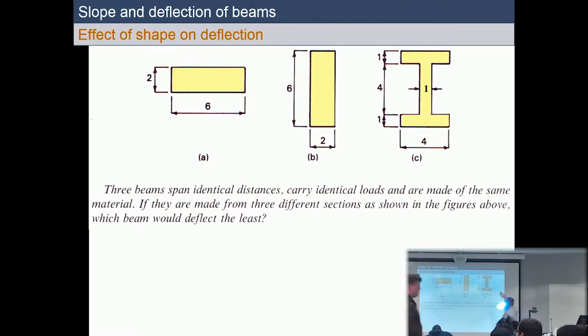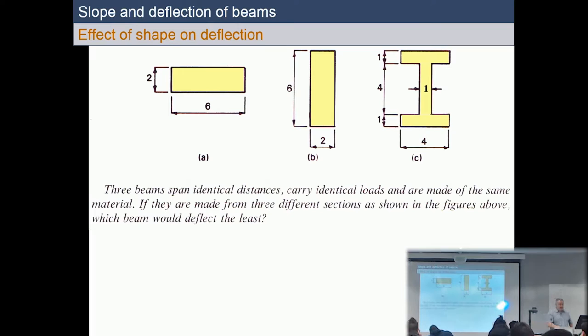You could work out in terms of answering this question, you could work out which has got the largest I value. You'd have to try and sort of figure out using the calcs, whether it was B or C. This one, you would just use your BD cubed over 12. That one there, you'd have to use the parallel axis theorem. And if you had the same shape, if it was steel or timber, obviously the timber's going to deflect the most.